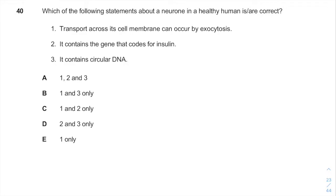So, transport across its cell membrane can occur by exocytosis? Yes, of course, it can. In general, neurons can make exocytosis and especially for neurotransmitters.